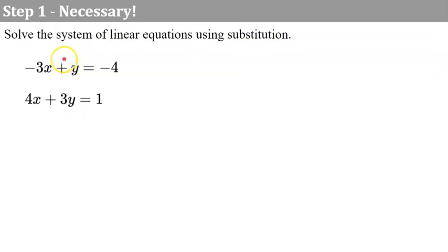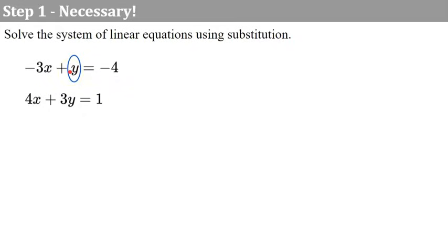We're going to solve the system using substitution, and neither of these equations are solved for y or x — there's nothing y equals or x equals. So I'm going to identify that this first equation has a y with a coefficient of 1, so this would be the simplest equation to solve for y. However, you could solve either one. I'm going to solve this equation for y by adding 3x to both sides to get y alone: y equals 3x subtract 4.